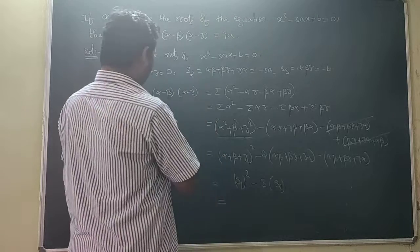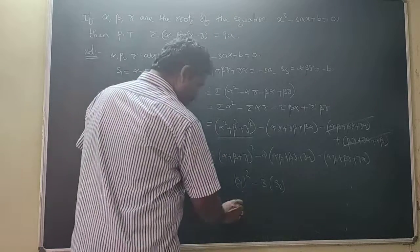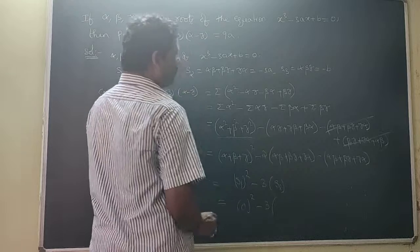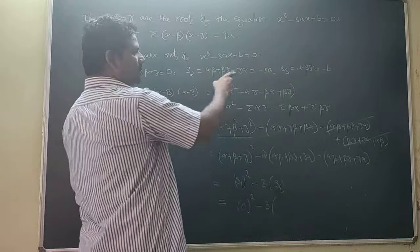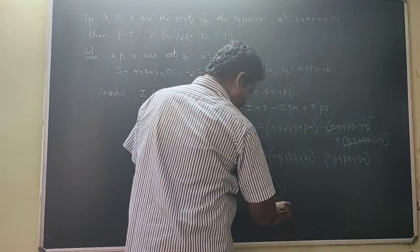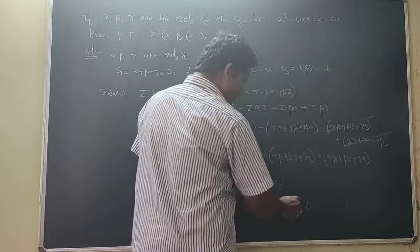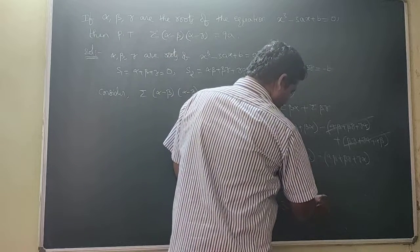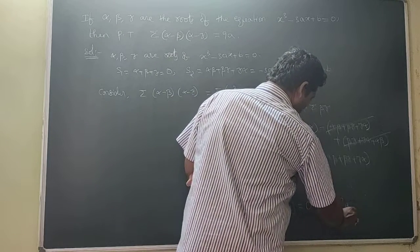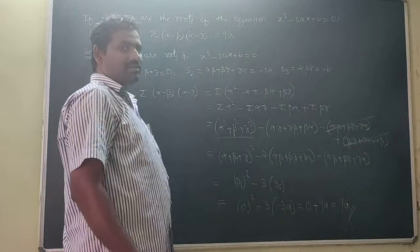That equals S1² - 3·S2. S1 = 0, so 0² - 3 × (-3) = 0 + 9 = 9. That is the answer.